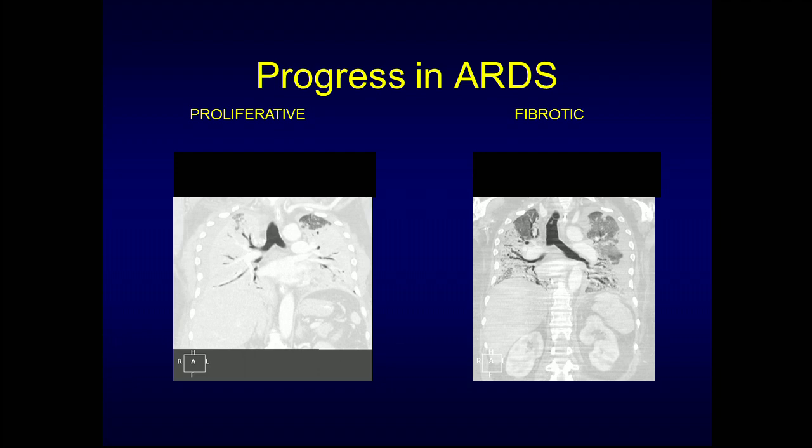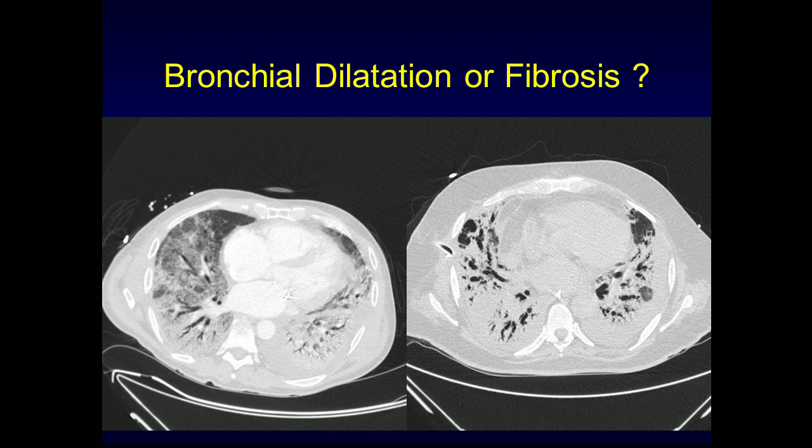Here is a patient in the proliferative phase — coronal CT slices — who was transferred to our unit with SARS coronavirus. You can see he has almost completely consolidated lungs. Later, after a prolonged period on ECMO, his residual coronal scans show these very fibrotic, tortuous, dilated airways with some aeration in the upper lobes but still a lot of fixed fibrosis at the bases.